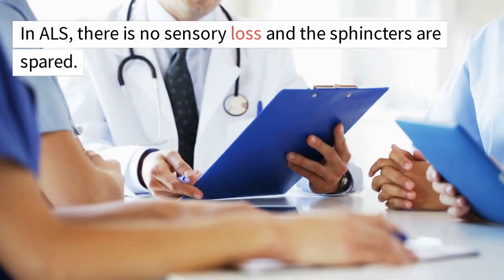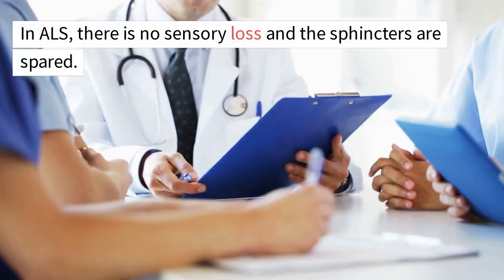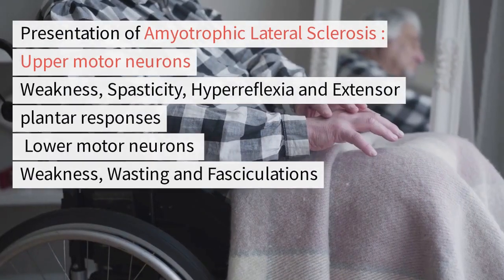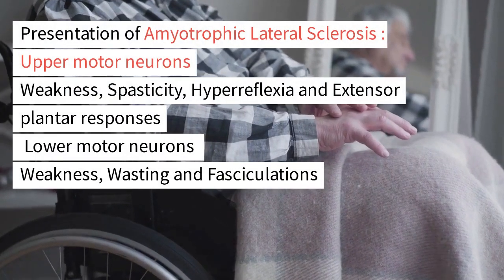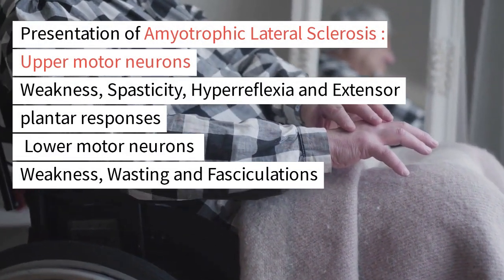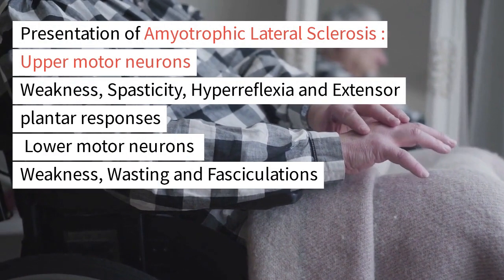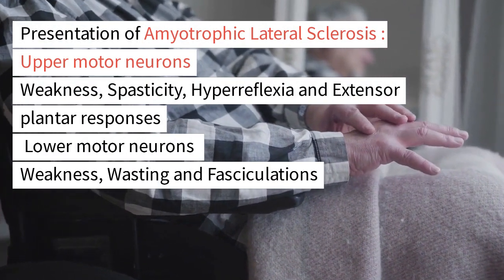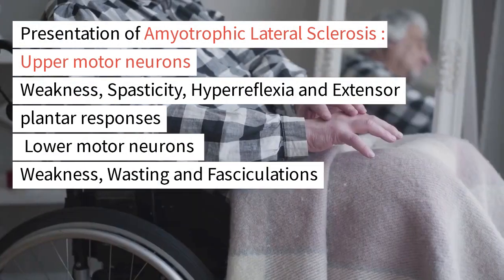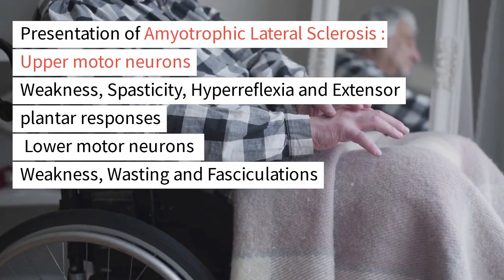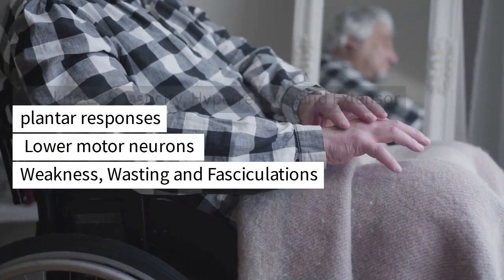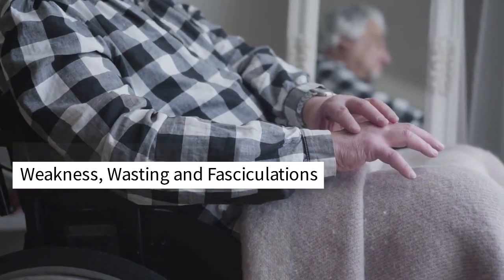In ALS, there is no sensory loss and the sphincters are spared. Presentation includes upper motor neuron weakness, spasticity, hyperreflexia and extensor plantar responses, as well as lower motor neuron weakness, wasting, and fasciculations.